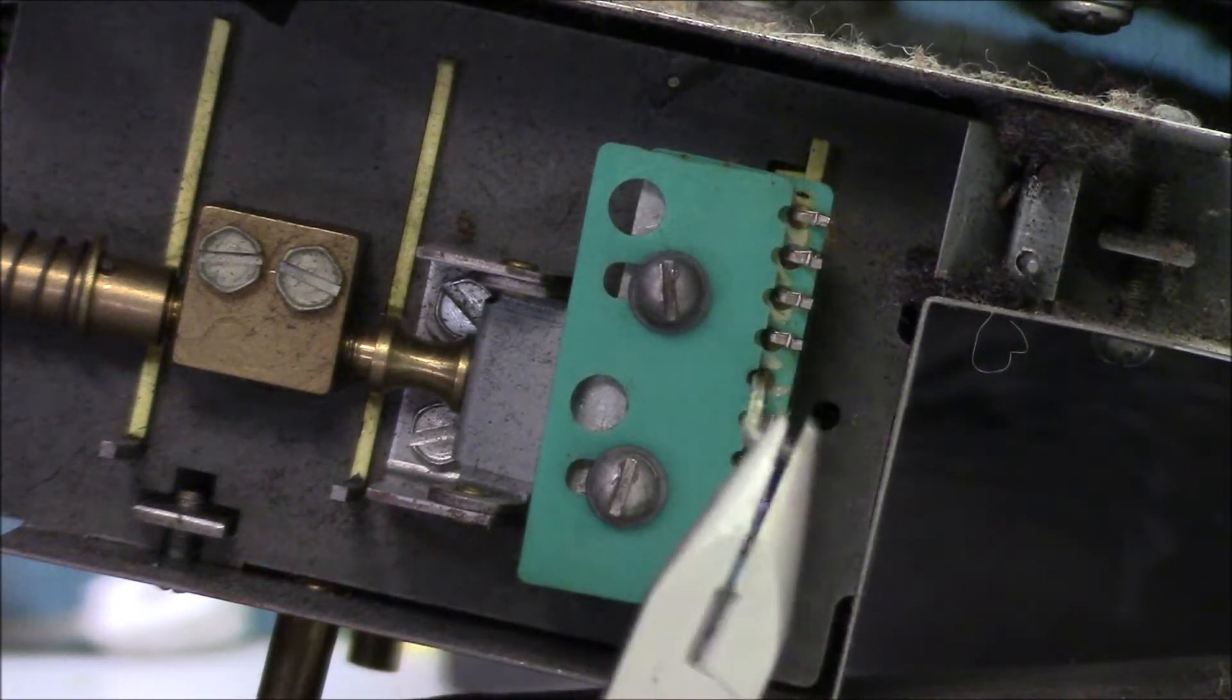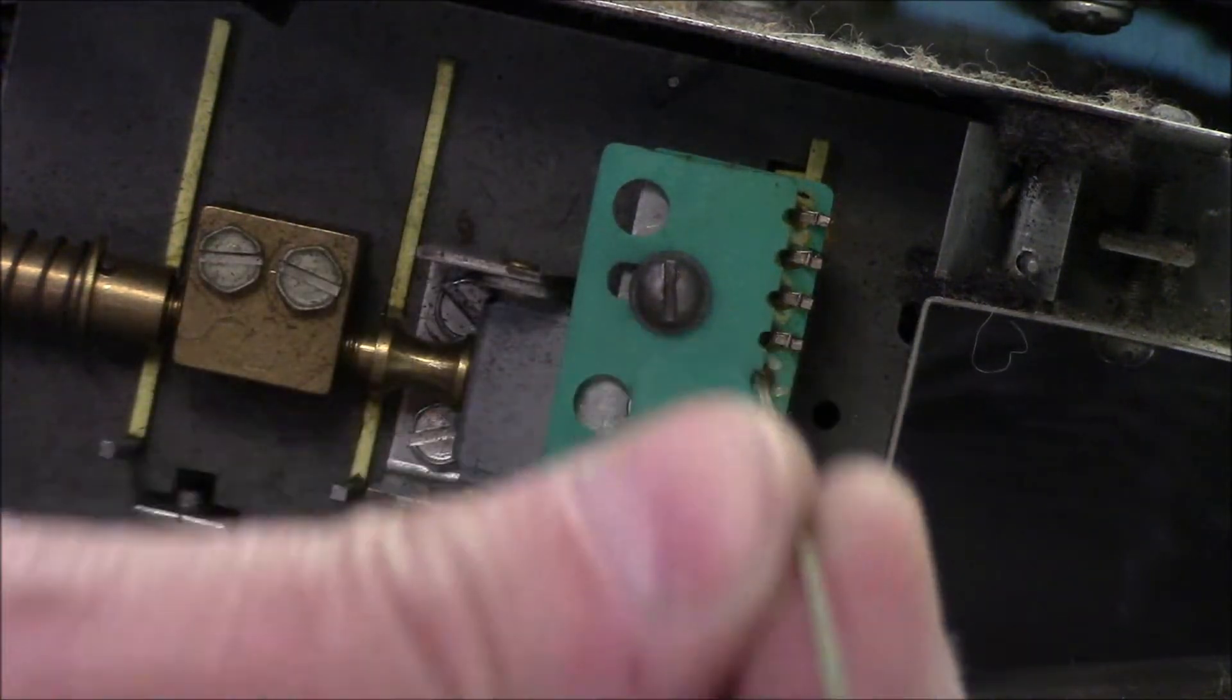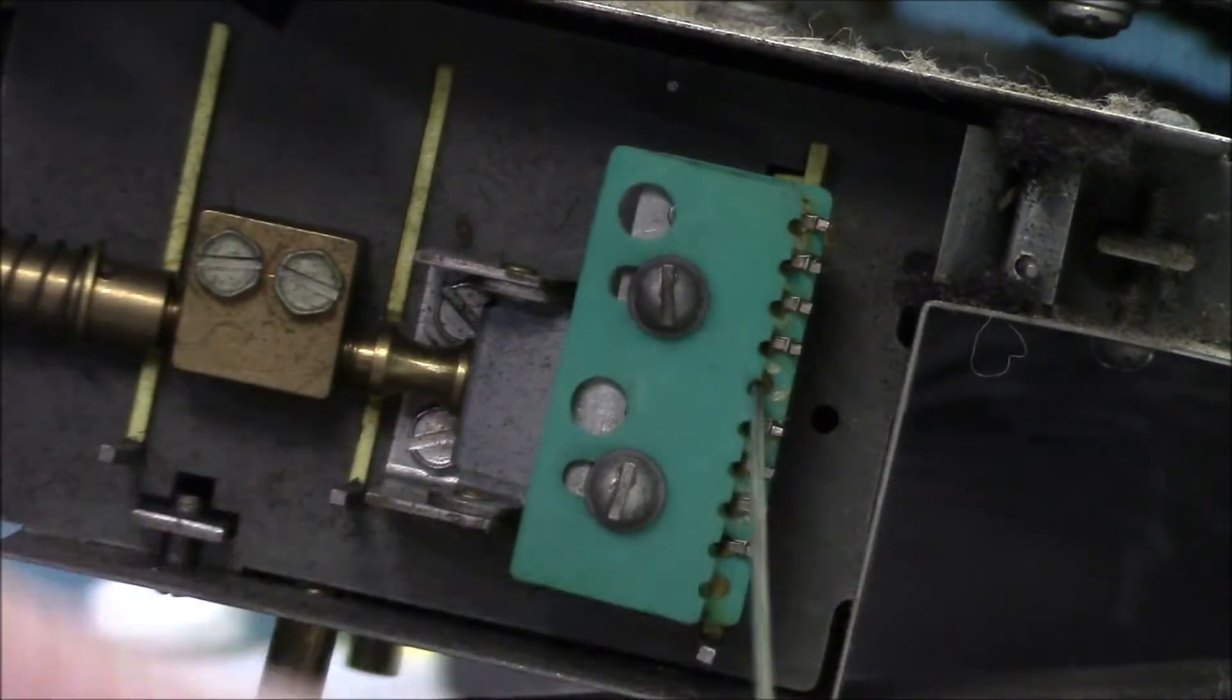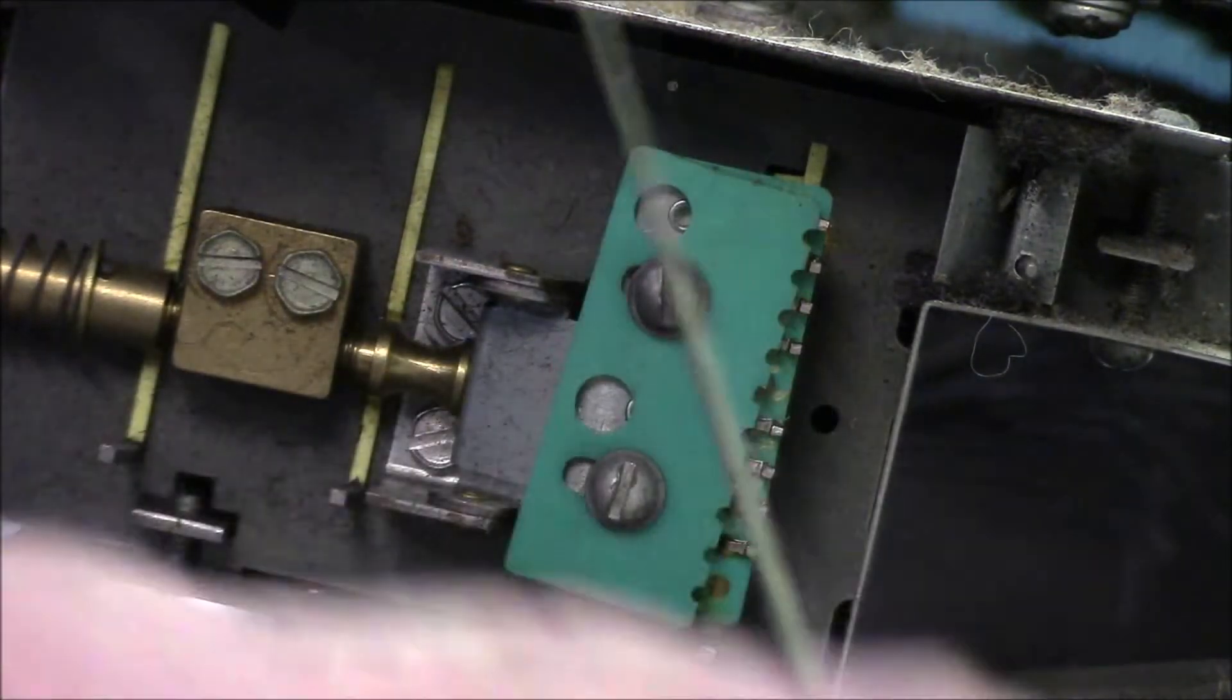So once you loosen those screws and push the plate back, you can extract the bus bars. Just be very careful that you don't kink them.